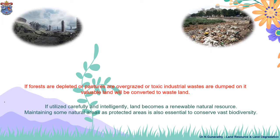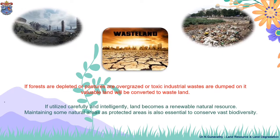If forests are depleted, or pastures are overgrazed, or toxic industrial waste is dumped on it, valuable land will be converted to waste land. So if utilized carefully and intelligently, land becomes a renewable natural resource. Maintaining some natural areas as protected areas is also essential to conserve vast biodiversity.